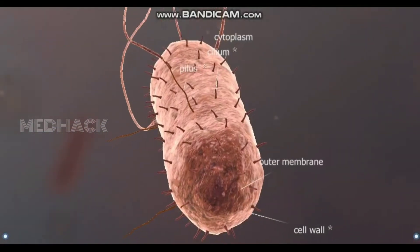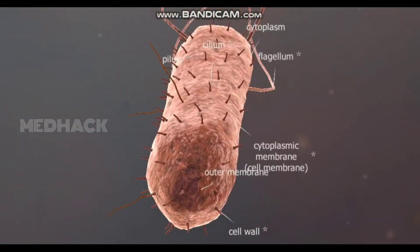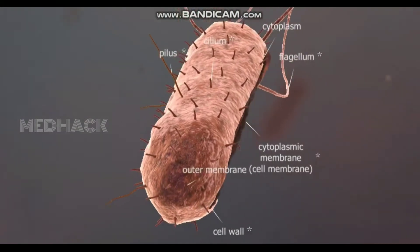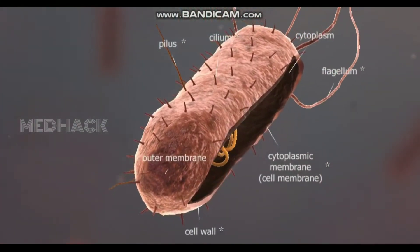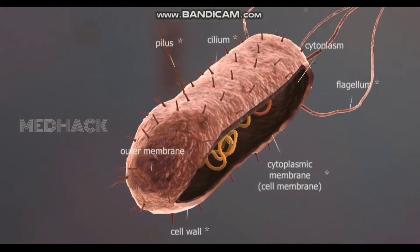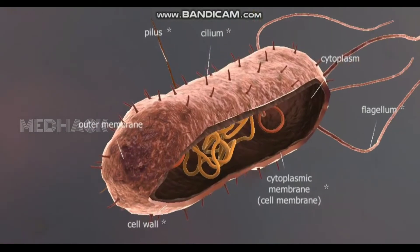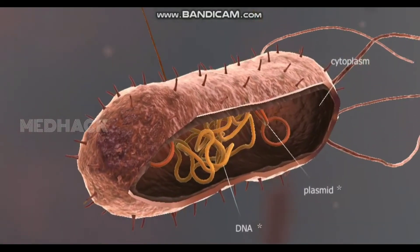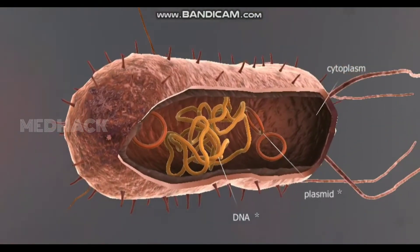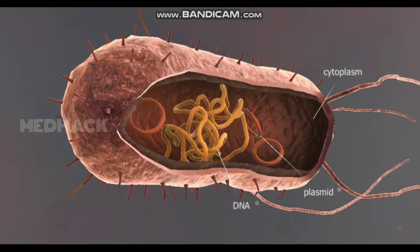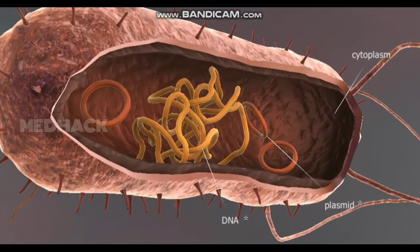The bacterial cell is enclosed by a cell wall. Cilia, pili, and flagella may be found on the surface of the cell wall. The cytoplasm, which is surrounded by a membrane, constitutes the main mass of a bacterial cell, and the circular bacterial DNA is embedded in it. The cytoplasm also contains short, ring-like DNA molecules called plasmids, which are both physically and functionally separate from the bacterial DNA.